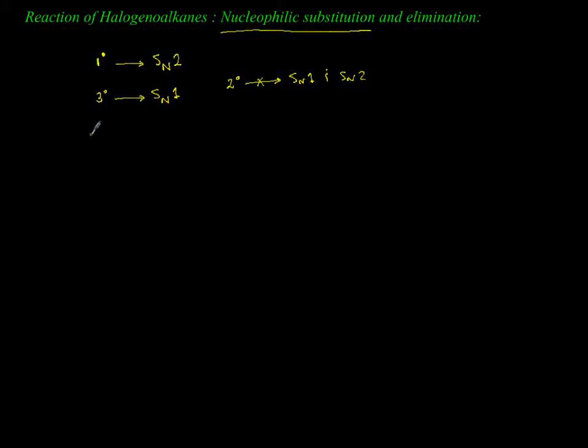Nucleophiles that you are limited to know: the strongest is cyanide (CN⁻), then you have hydroxide (OH⁻), and you also have to know why the strength is like that. Then you have ammonia (NH₃) and H₂O as the weakest nucleophile. Substitution by definition is you substitute the halogen with one of these nucleophiles.